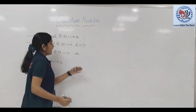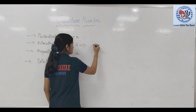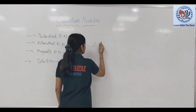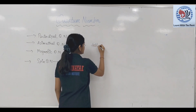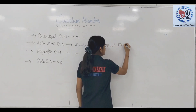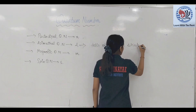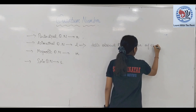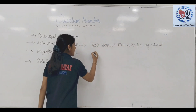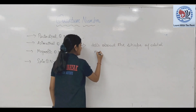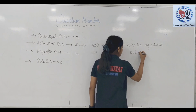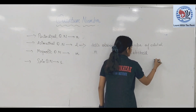Azimuthal quantum number L जो होता है, वो हमें shape बताता है — orbital की shape। It tells about the shape of orbital. अगर N और L की values हैं तो हमें sub shell और shape का पता चलता है।